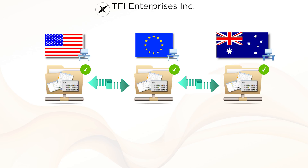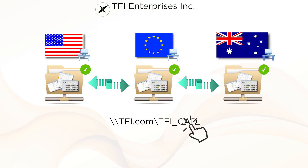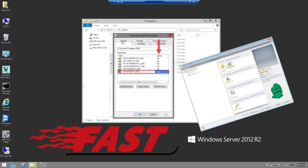DFS generates and hands you a single folder path, and everybody at every site uses that exact same path. It's ideal for fixed path references and CAD applications. When that path is accessed by a user, DFS knows exactly where that user is based in the world and automatically reroutes them to their local shared folder.